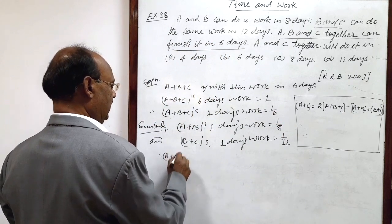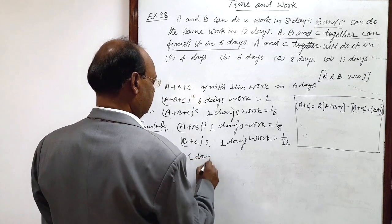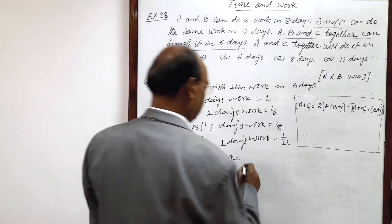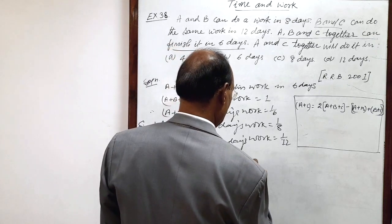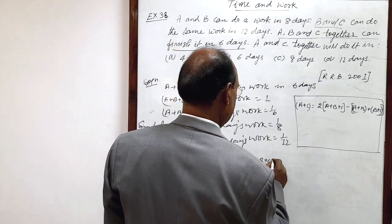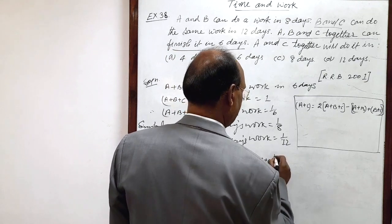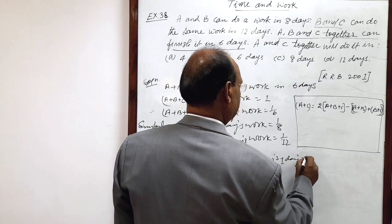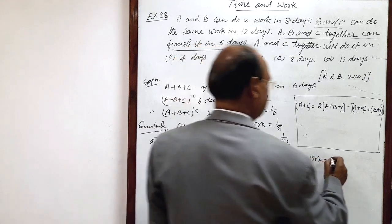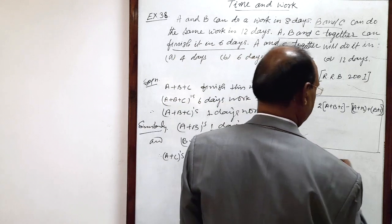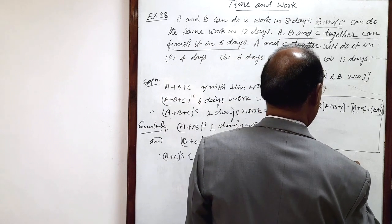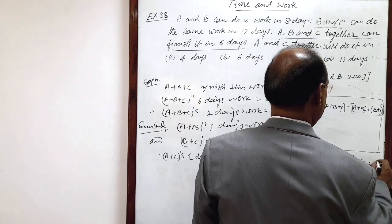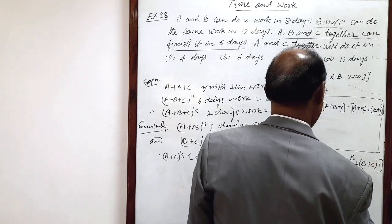A plus C's 1 day's work is equal to 2 times of A plus B plus C's 1 day's work minus A plus B's and B plus C's 1 day's work.